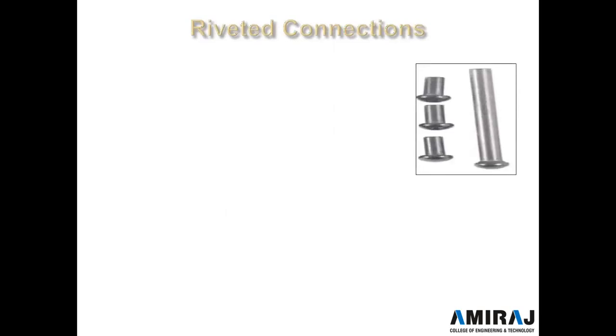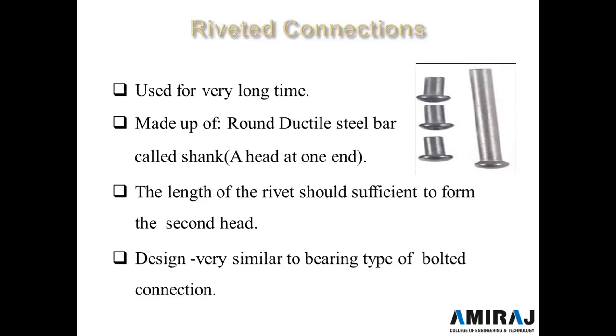Now let's talk about riveted connections — just for introduction. Riveted connections are nowadays not in use because of the widespread use of bolted and welded connections. This figure shows a rivet. Riveted connections can also be seen in old bridges and other structures. Riveting was used for a very long time in past decades. It is made up of a round ductile steel bar called a shank, with a head at one end. The length of the rivet should be sufficient to form the second head, and its design is very similar to the bearing type of bolted connection.